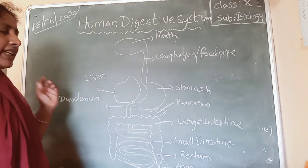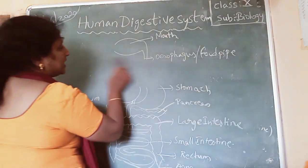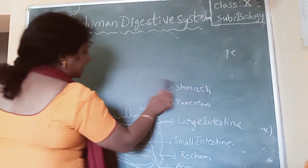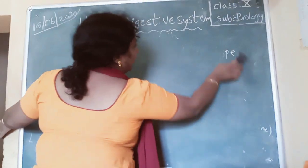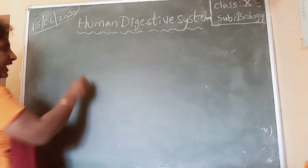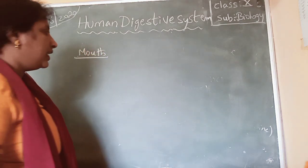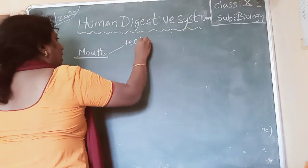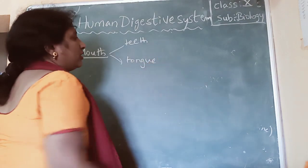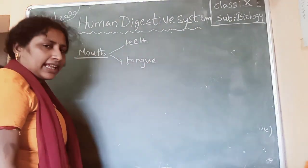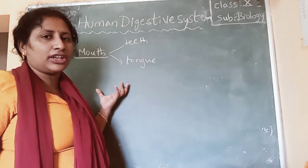Now let us discuss each and every part in detail. First — the mouth. If you see the mouth, what happens? The first digestion takes place in the mouth. We take food through our mouth. In the mouth, we have teeth and we have a tongue. The teeth help in crunching of food.